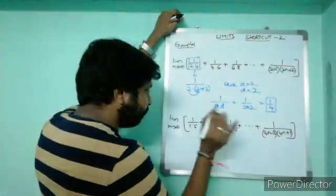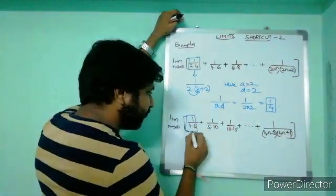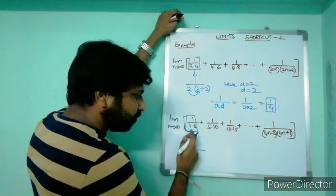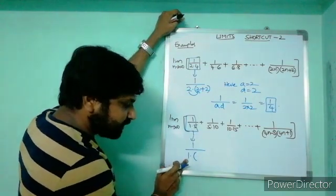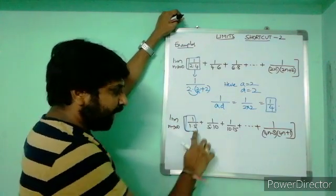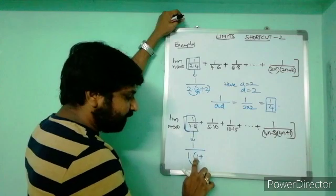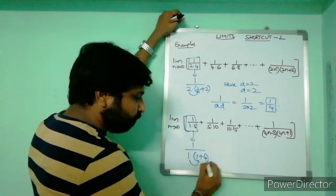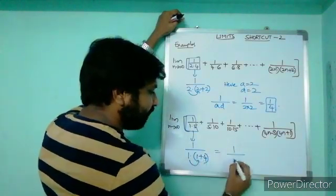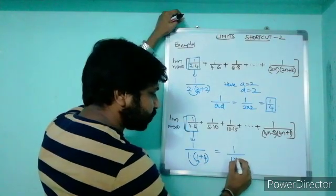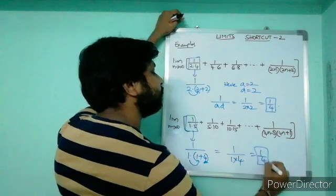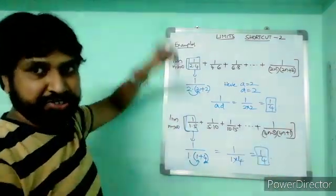Similarly, for the next question, concentrate on the first term. Write it as 1/(1×5), which is of the form 1/(a(a+d)) with a = 1 and d = 4. So the answer is 1/(a·d) = 1/(1×4) = 1/4. Thank you very much, friends.